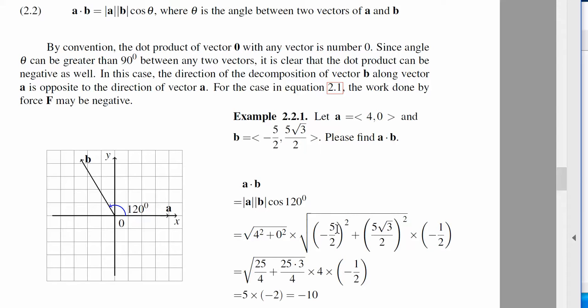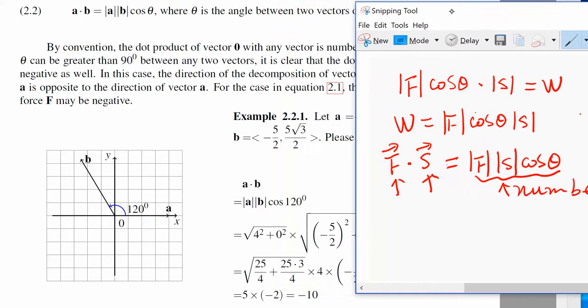The X component of B is negative 5 over 2 squared plus 5 radical 3 over 2 squared, add those together. Then we know 5 squared is 25, 2 squared is 4. 5 squared is 5 times 3 times 3.